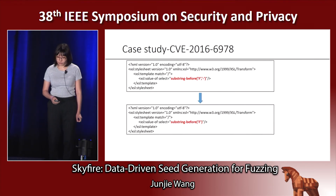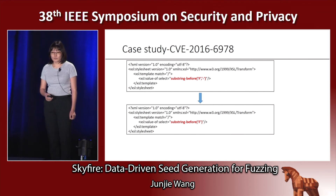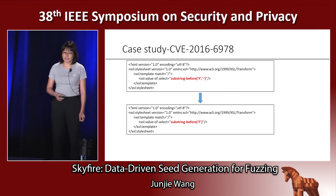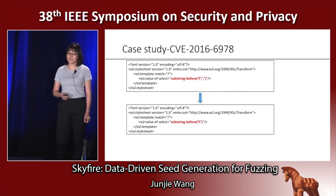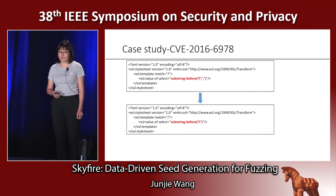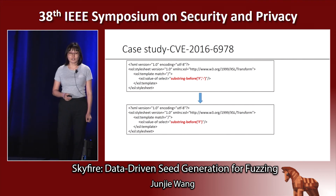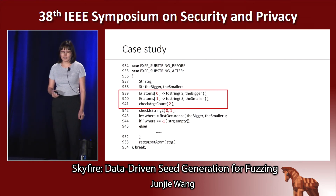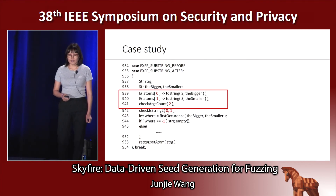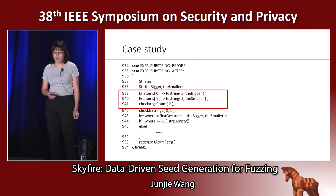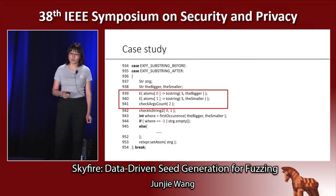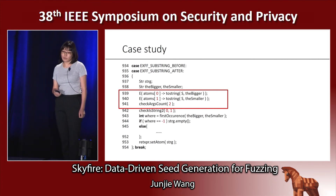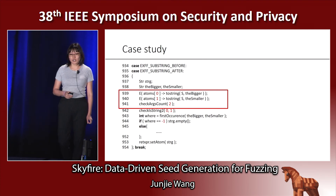Finally, here is a case study. The code sample shown is a test case generated by SkyFire. Initially it triggers no crash, but when AFL mutates it into the form shown below, it triggers a crash. When we analyzed the root cause, we found that Sablotron did an improper input verification. The functions substring-before and substring-after actually take two arguments as inputs. However, Sablotron first accesses those two arguments, then later checks whether two arguments were actually passed in. So when only one argument is passed, it triggers a buffer overflow condition.